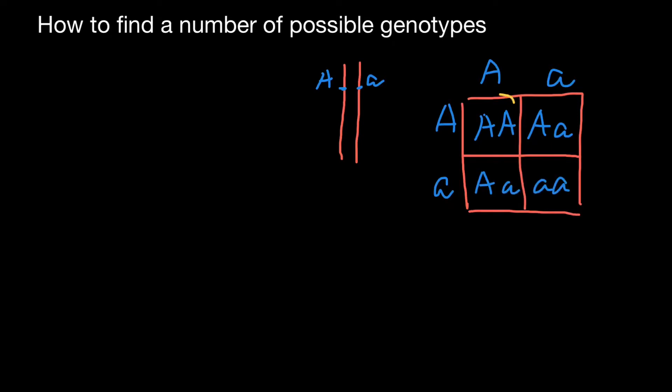So we have one genotype here. Here's another genotype here. Here is another unique genotype. So with two alleles in one locus, we can get three genotypes.